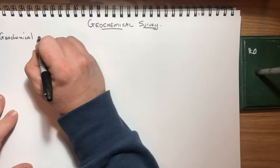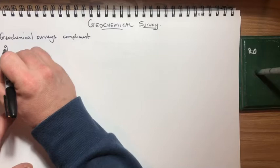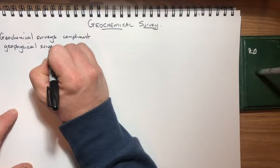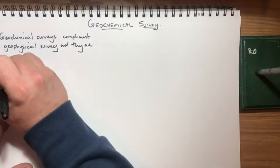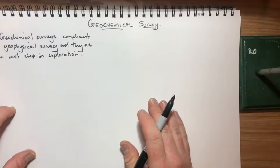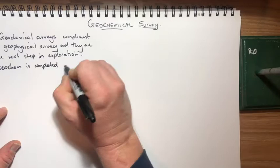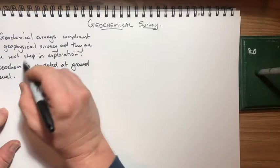So geochemical surveys complement geophysical surveys and they are the next step in exploration. Whereas geophysical is done by the air, geochemical is done at ground level and it's done by sampling.